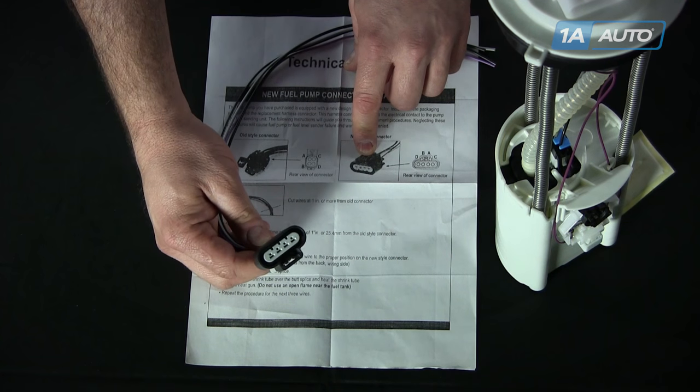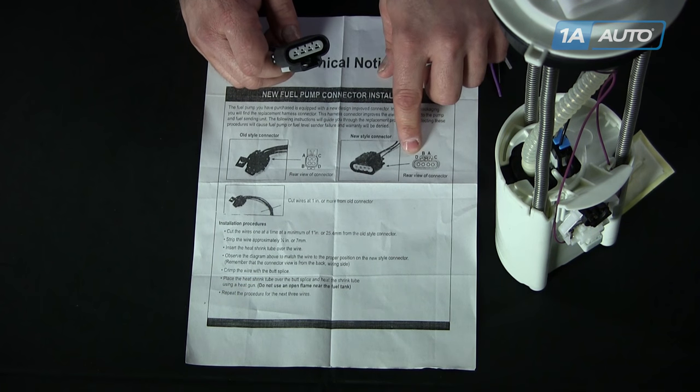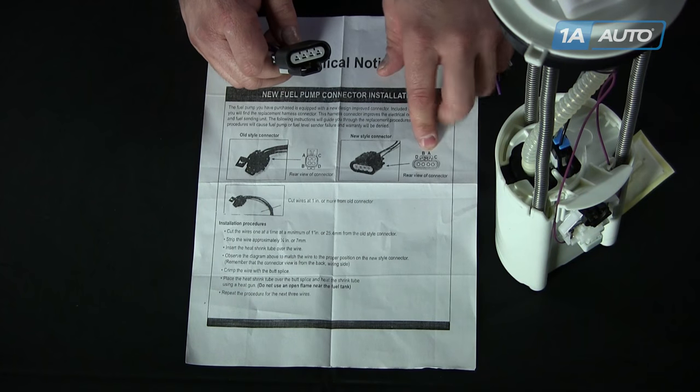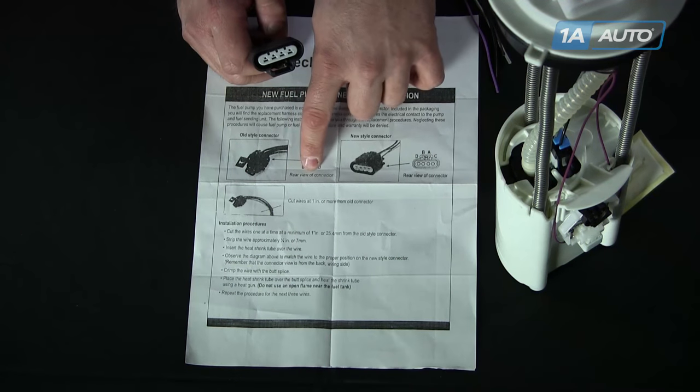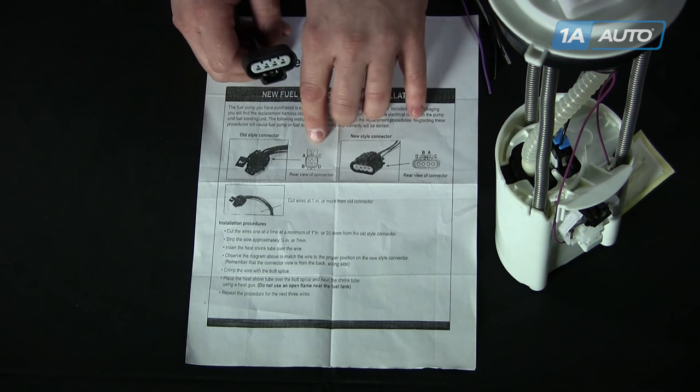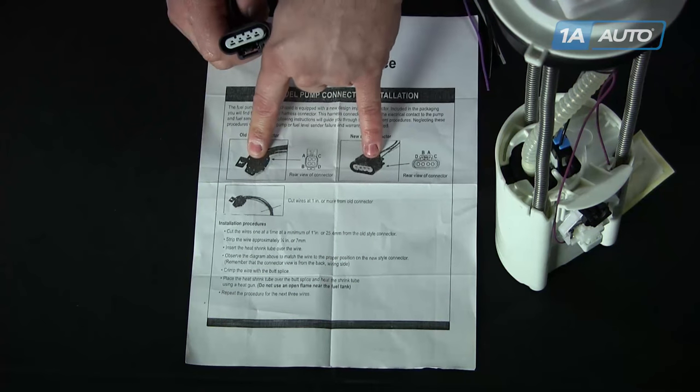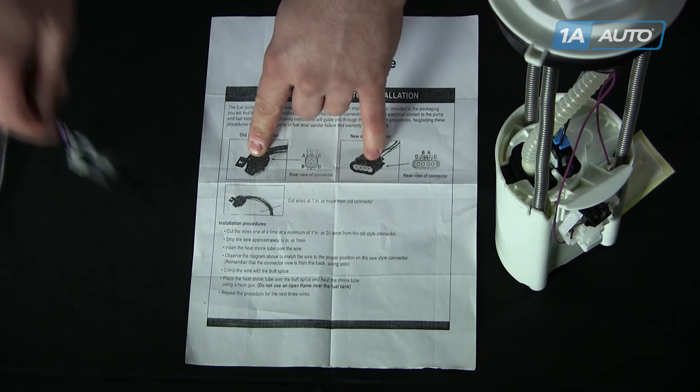As you can see here, these are also labeled ABC and D. But the key thing that you have to pay attention to is listed below—it says rear view of connector. So what they're telling you to do is not look into the front of the connector as these pictures show, but to look in the back section here. This is the key.